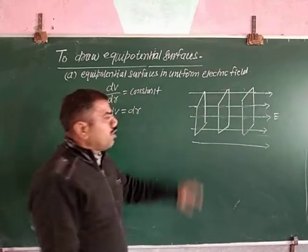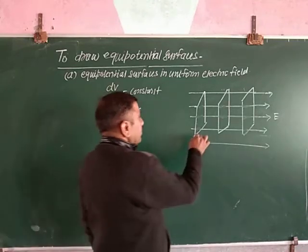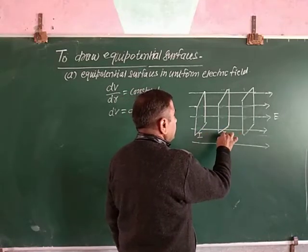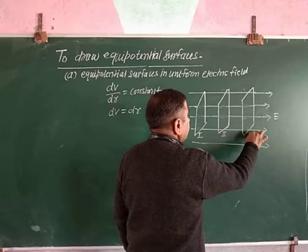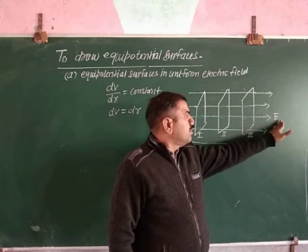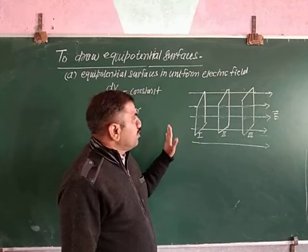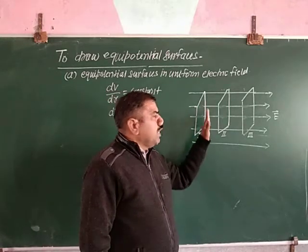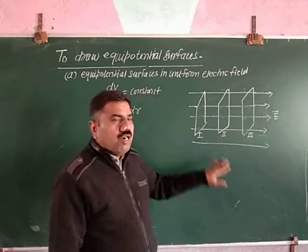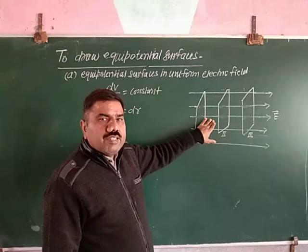This is the condition of equipotential surfaces in a uniform electric field. This is equipotential surface 1, this is equipotential surface 2, and this is equipotential surface 3. The direction of the electric field is shown by the arrow. As we know, the equipotential surfaces are perpendicular to the direction of the electric field, and you can observe this same condition in this diagram.